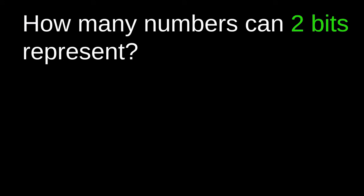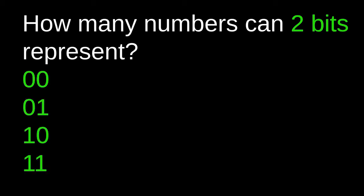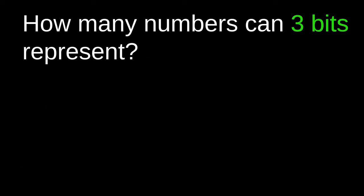Let's take a step back and answer simpler questions first. How many numbers can two bits represent? This is easy — we can just count them: 00, 01, 10, and 11. That's four numbers.